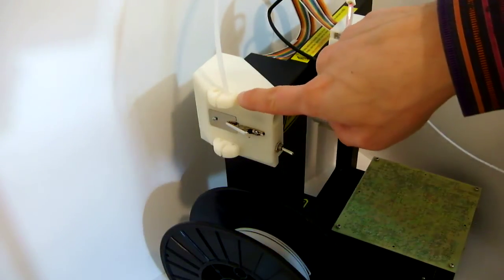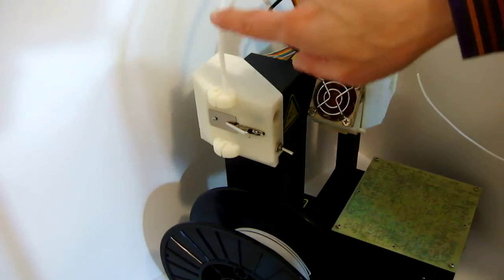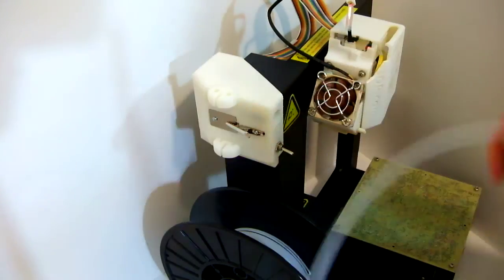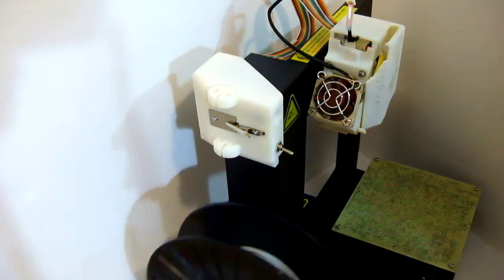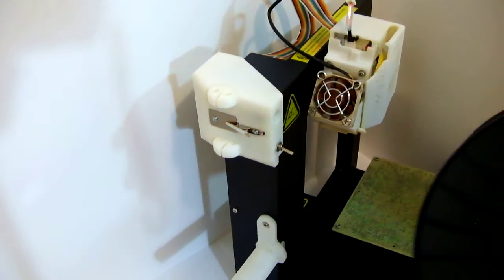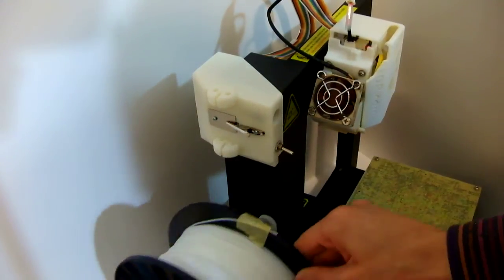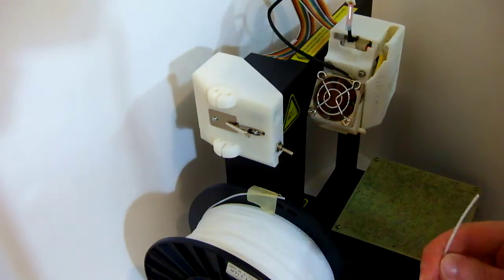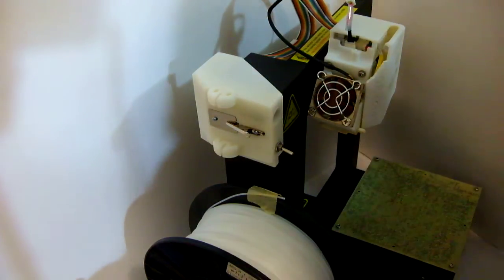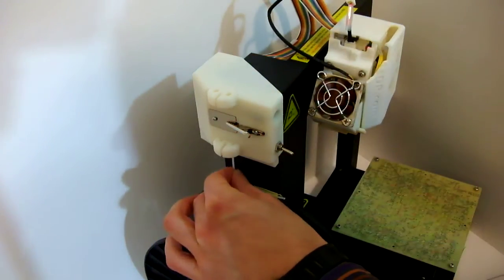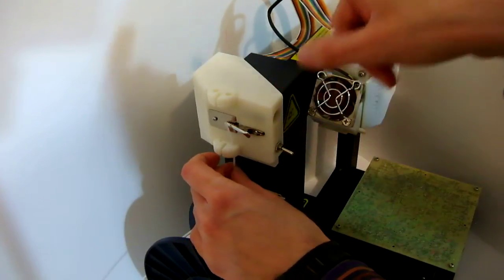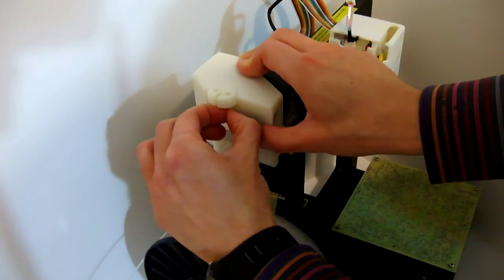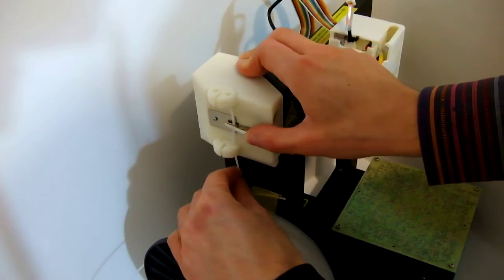We have the time the filament goes through the tube to change the filament spool. We remove the old filament and put a new one before the printer needs more.